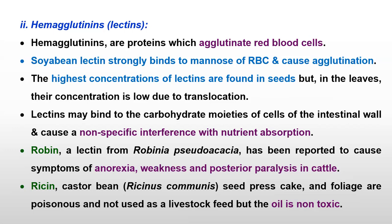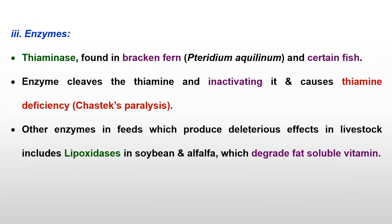Ricin is a well-known hemagglutinin and is present in castor seed. It may cause different biodefects in livestock. However, castor meal is non-toxic and is free from ricin. While castor cakes contain a good amount of medicine and seeds also contain a good amount of lectin.